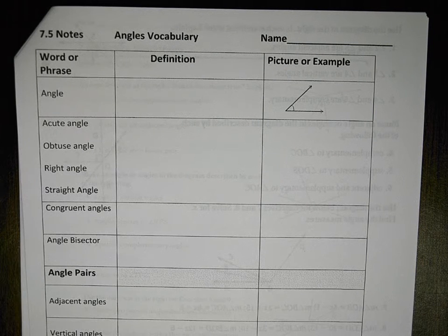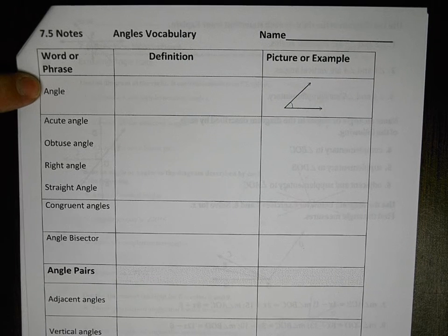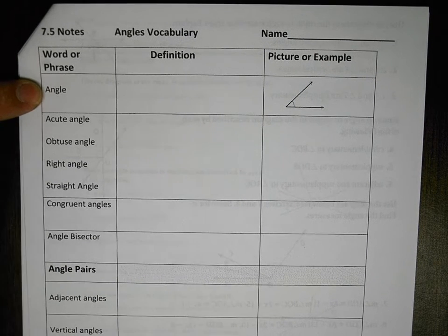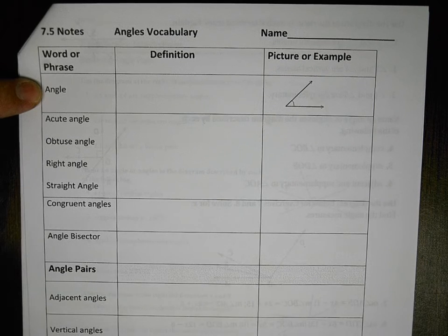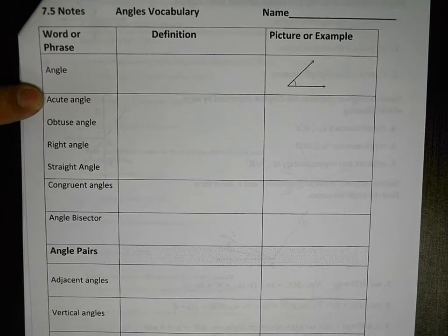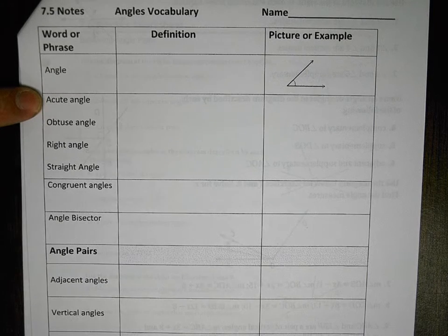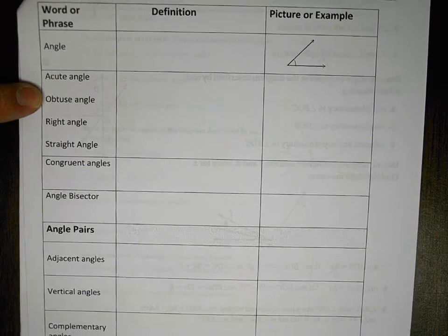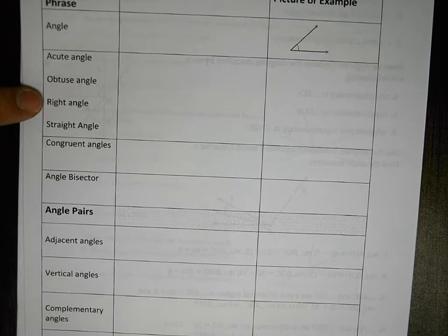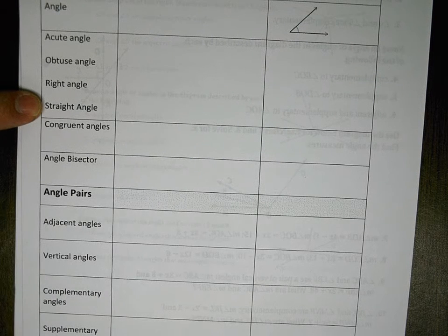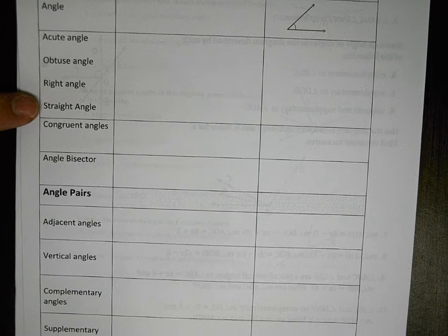Unit 7.5 notes — we are covering angle pairs today. We have previously filled this in: an angle is two rays that share a common endpoint. Acute angles are less than 90 degrees, obtuse angles are greater than 90 degrees, a right angle equals 90 degrees, and a straight angle equals 180 degrees. Any questions on those?